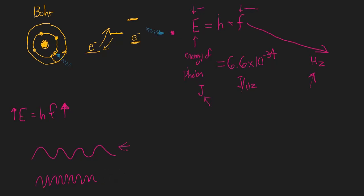Sometimes on the MCAT we won't be given frequency, but we'll be given wavelength instead. They might want us to calculate energy without giving us frequency directly. There are a couple of ways to determine frequency from other values. As we saw in a previous video, the speed of a wave equals frequency times wavelength. So if we're given speed and wavelength, we can calculate frequency and then plug that into the energy equation. Another variable we should mention is the concept of period.